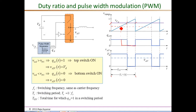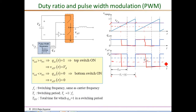For a lower value of V_C, Q becomes zero at the intersection of V_C and V_ramp and remains zero until the next period. The corresponding V_AN waveform has a lower pulse width, resulting in a lower average output voltage. This process of controlling the average output voltage by changing the pulse width via the control signal V_C is called pulse width modulation.